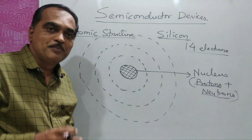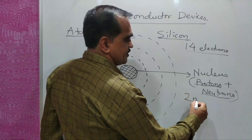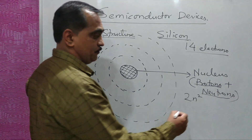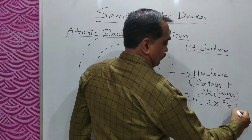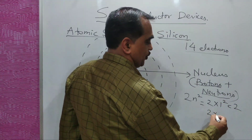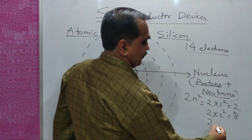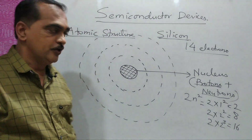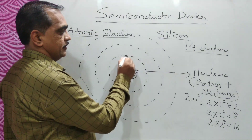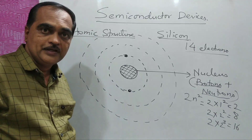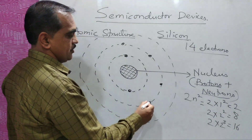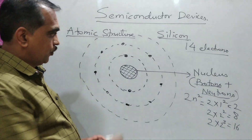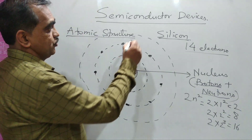The way electrons are placed in orbits follows the formula 2n², where n is the number of the orbit. In the first orbit: 2×1² = 2 electrons. In the second orbit: 2×2² = 8 electrons. In the third orbit it would be 16, but since silicon has 14 electrons total, with 2 in the first and 8 in the second, the remaining 4 electrons are in the third orbit.